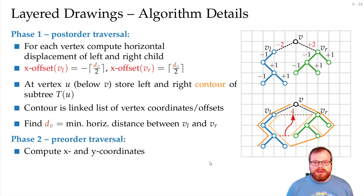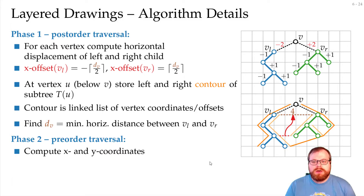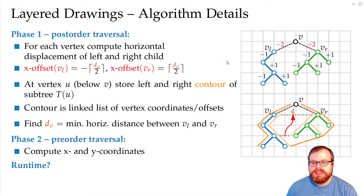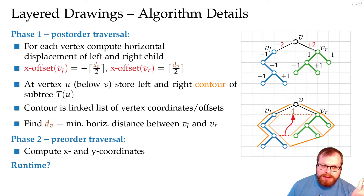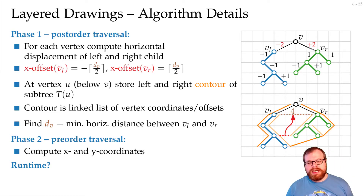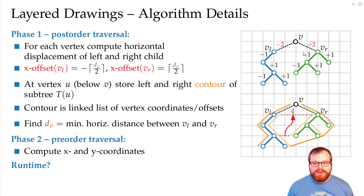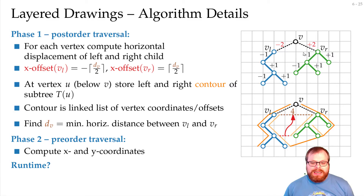Now we're done with the description of the algorithm. There are two things that remain: the running time and the correctness or properties of this algorithm. Let's start with the running time. The running time mainly depends on the conquer step — we have to calculate the minus two and the plus two, so we have to walk along these two contours. We don't know what the depth of the tree is, so it could be linear. We have order of n vertices, and in every step we might take order of n time, so we have a quadratic runtime total. That's not so nice. But if we are a bit clever, we can analyze this better and find that the whole thing only takes linear runtime.